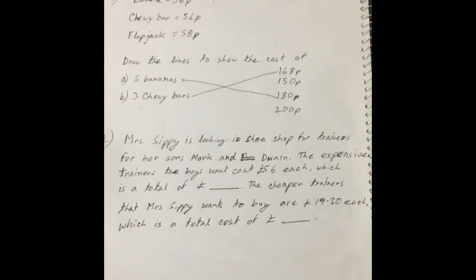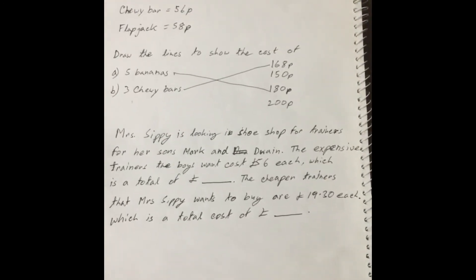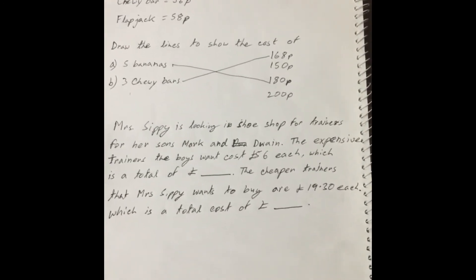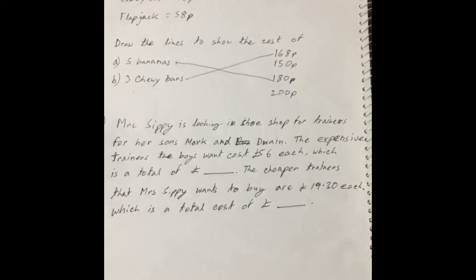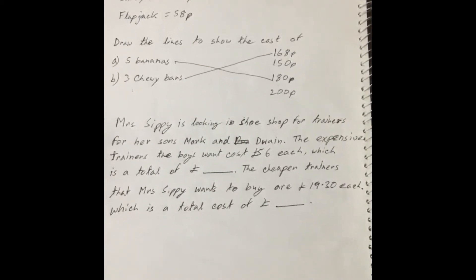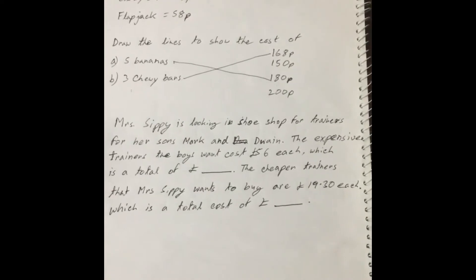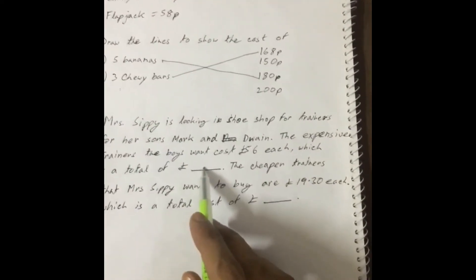Number 2: Mississippi is looking in a shoe shop for trainers for her sons Mark and Devane. The expensive trainers the boys want cost 56 each, which is a total of... here we have to write the total.